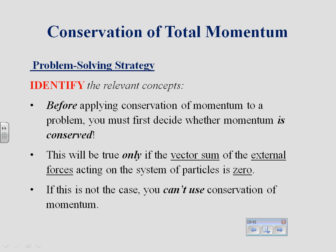It all depends on how you set up your system. If you're looking at a baseball colliding with a baseball bat, and you look at just the baseball, then the bat is an external force and the momentum of the baseball itself is changing. If you look at the ball and the bat together as your system, then the forces between them are both internal forces. Although the momentum of each changes, the total momentum of the system does not. So whether you can use conservation of momentum depends on how you pick your system.